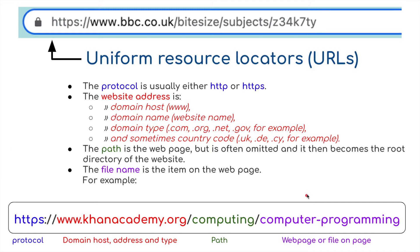Now let's talk about the actual address itself — this is called a Uniform Resource Locator, or URL. We've typed in an address such as bbc.co.uk. A URL is broken up into several parts: the protocol, the web address, the path, and the file name.